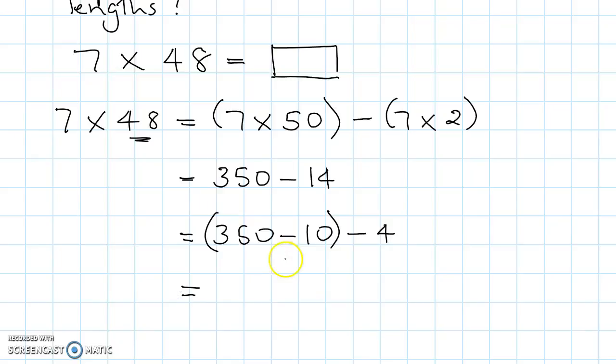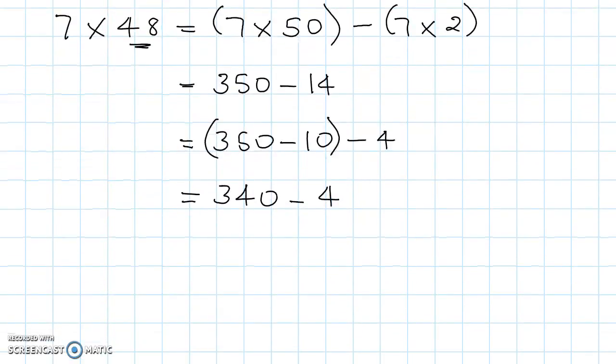Look at those. 350 take away 10. That would be 340. Take away 4. So 340 take away 4 would be 336.